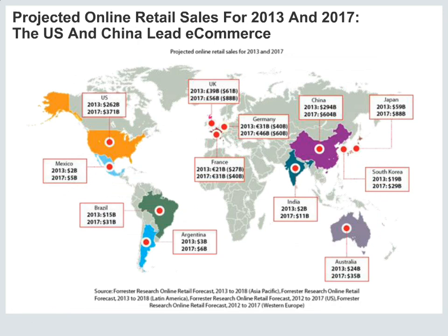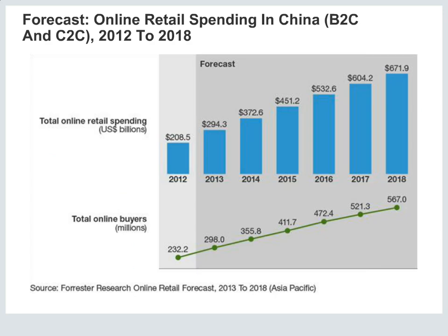To give you an idea of the vast size of China's online market: online retail sales in 2013 surpassed that of the U.S., and are much bigger than those in Japan, South Korea, India, Australia, and the U.K. By the end of 2014, China's online retail spend had already far surpassed that of the U.S. The numbers aren't directly comparable since Forrester's China forecast includes both B2C and C2C sales, whereas the U.S. forecast only looks at B2C — and C2C makes up a large part of China's online retail market.